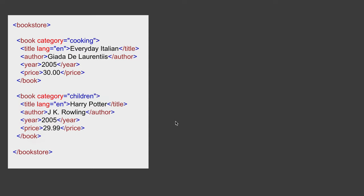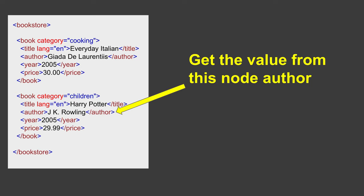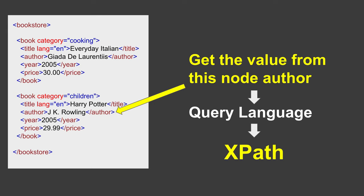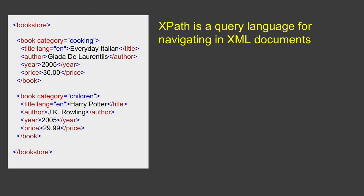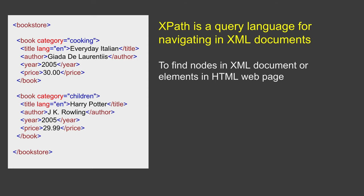This is our very simple XML. Now let's say I want to extract the value 'JK Rowling' from this XML. For this I need some kind of a query language that I can use to parse or traverse through this XML and return the value — and that query language is XPath. XPath is a query language for navigating in XML documents. It can be used to find nodes in an XML document or to find elements in HTML web pages.